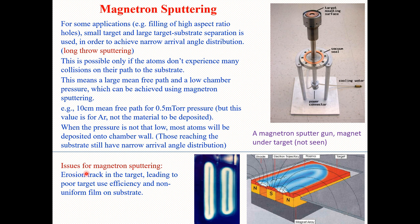There are also issues related with magnetron sputtering. One main issue is erosion tracks on the targets, as you can see in this figure. These erosion tracks lead to poor target use efficiency and non-uniform film deposition on the substrate. This is one of the main drawbacks of magnetron sputtering. That's all for this lecture — thanks for watching, see you next lecture.